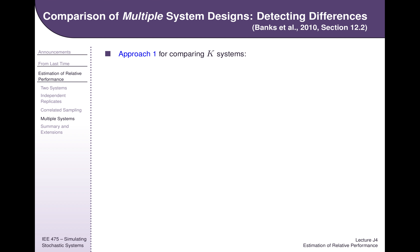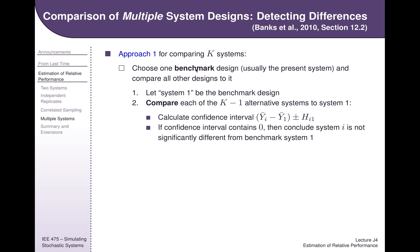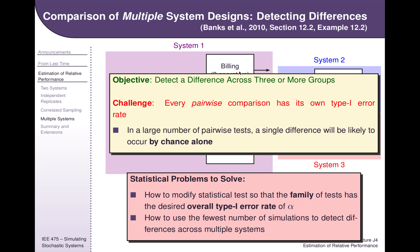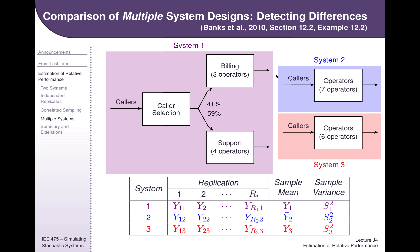So how could we compare these systems? One simple approach is to create a benchmark design. That benchmark design could be the original system, and then you're comparing your two novel systems to the original system to see if they have an improvement. Or your benchmark could be system two — a system where we know we've got seven operators, so we've got the same amount of resource, but we've also streamlined other parts of the system. We're pretty confident that system two is going to be better, but we also know it's going to be more costly, and we really want to see if system three has the same performance as system one.